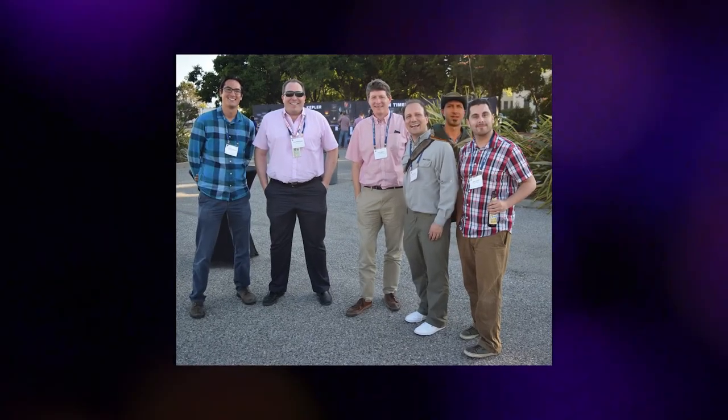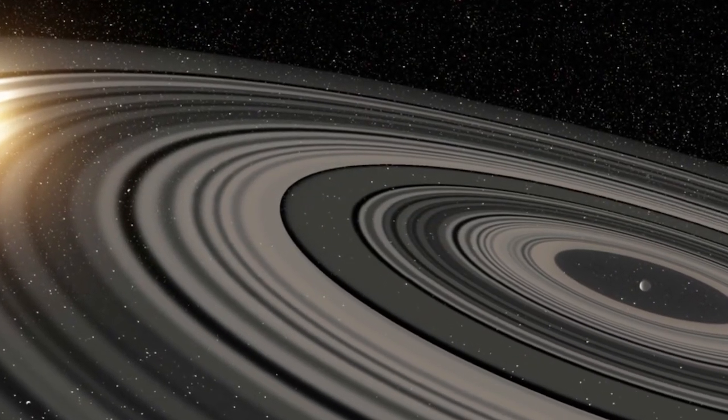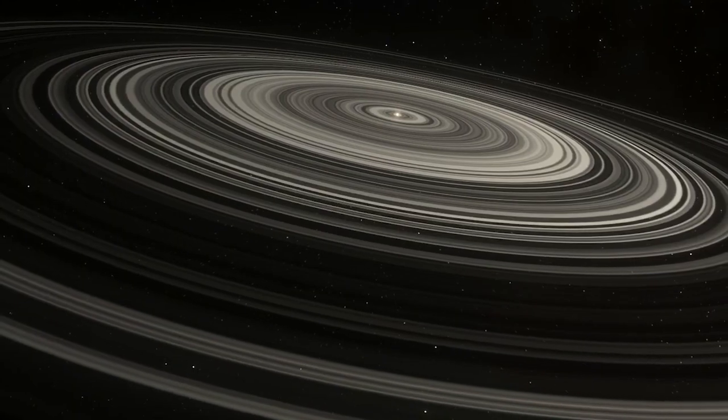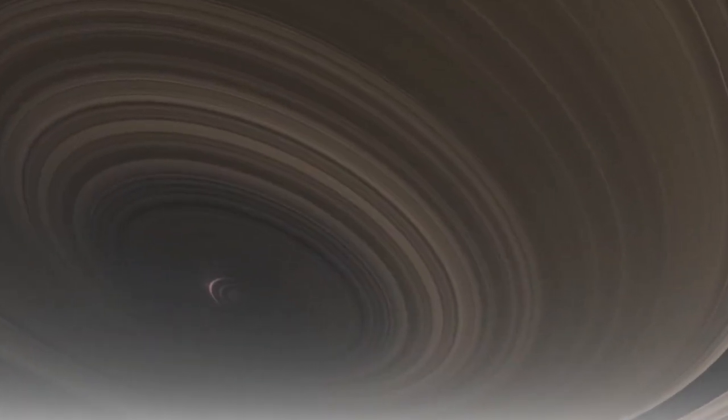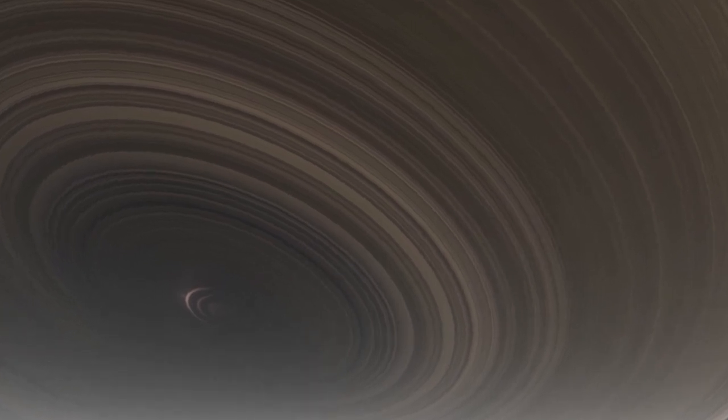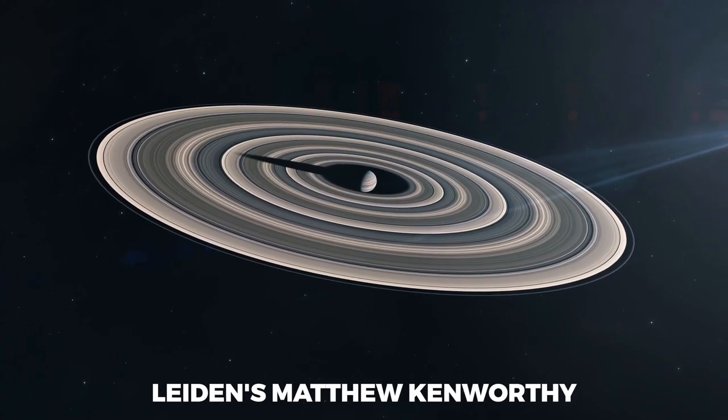A team led by Eric Momajek of Rochester made the first discovery of its kind outside of the solar system in 2012 when they uncovered the ring system. The ring system is revealed to consist of over 30 rings, each measuring tens of millions of kilometers in diameter, according to a recent examination of the data headed by Leiden's Matthew Kinworthy.